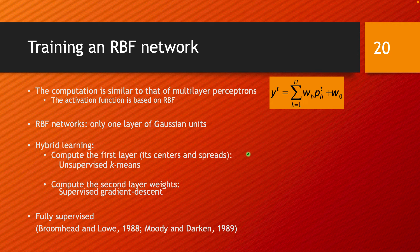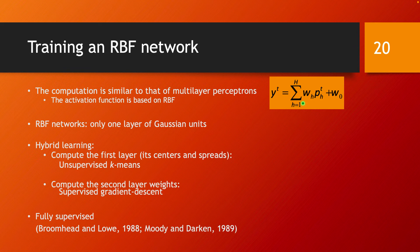These networks are called Radial Basis Function Networks because the activation function is called a Radial Basis Function. The computation is very similar to that of multi-layer perceptrons, except the hidden layer uses Radial Basis Functions instead of multiplicative activations. The output layer connects to the hidden layer in exactly the same way, with interconnection weights and a bias.